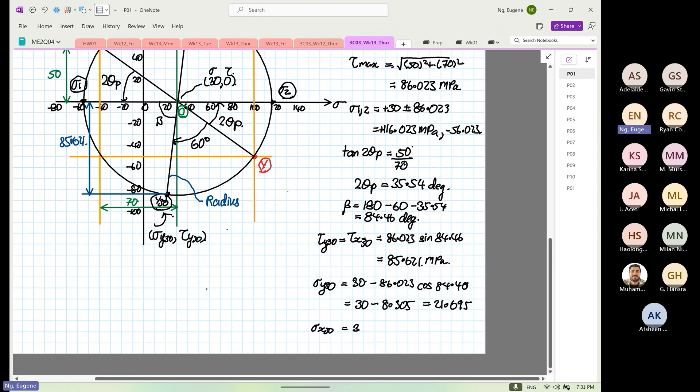So this will be equal to 30 minus 8.305, which is equal to 21.695. Then we do our stress σx30. This will be 30 plus 8.305, so it's 38.305 megapascals. Now is where the money is, bringing from Mohr's circles. This one is different from the example we took last week because there was no shear. Today we have a shear, are we clear?